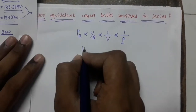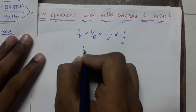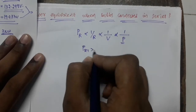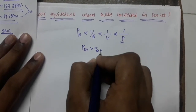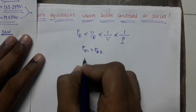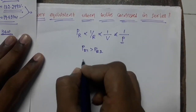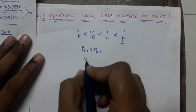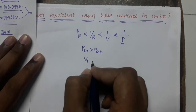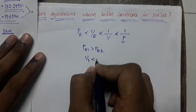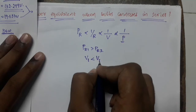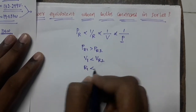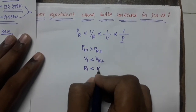When PR1 is greater than PR2 — coming to the voltage, the voltage drop across bulb 1 is less than voltage drop across bulb 2, and resistance of bulb 1 is less than resistance of bulb 2.